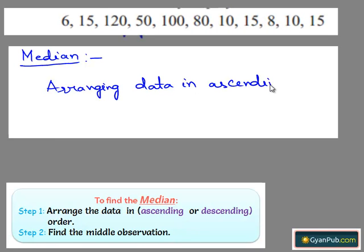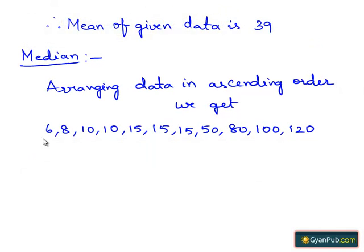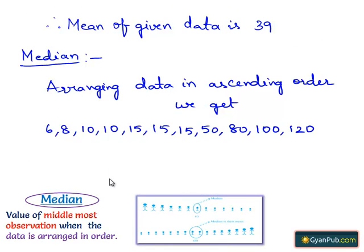Arranging the data in ascending order we get 6, 8, 10, 10, 10, 15, 15, 15, 15, 50, 80, 100 and 120. Since we know median is the middlemost observation, strike one observation from left and another observation